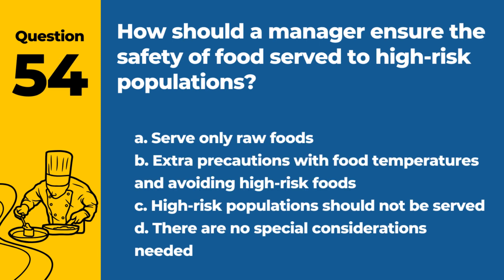Question 54. How should a manager ensure the safety of food served to high-risk populations? A. Serve only raw foods. B. Extra precautions with food temperatures and avoiding high-risk foods. C. High-risk populations should not be served. D. There are no special considerations needed. Answer: B. Serving high-risk populations requires heightened attention to food safety, especially with temperature control and avoiding foods that pose higher risks.